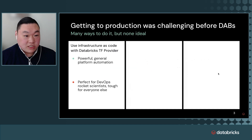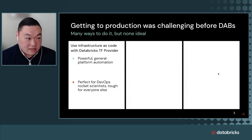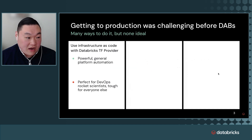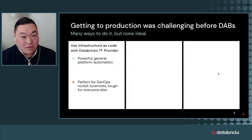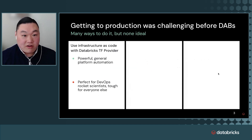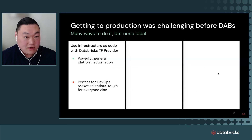Beforehand, getting to production was really challenging. Of course, you could use IAC such as the Databricks Terraform provider — it's powerful in general. However, if you didn't have DevOps engineers or rocket scientists on the team, it could be tough. If your persona was more of a machine learning engineering team, getting MLflow-based models deployed and running those tasks could have been a little harder.